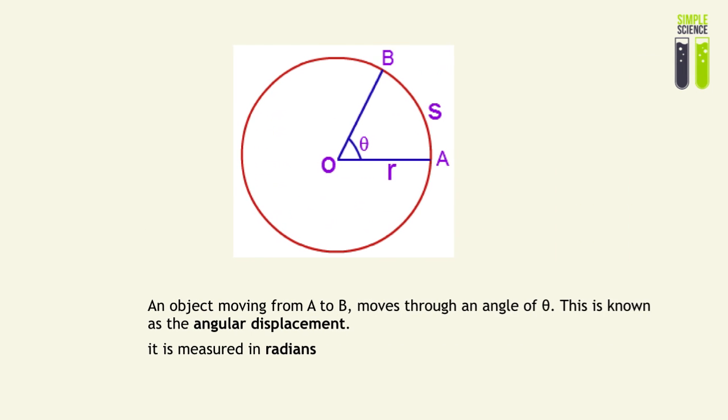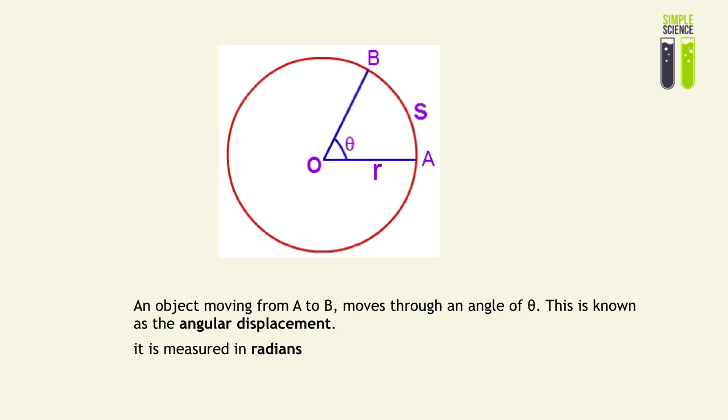So when you look at this diagram, when an object moves from A to B, it is going to move through an angle about the center of a circle. And that angle which it moves from, the angle subtended, is called theta, as we like to call it in circular motion. And this is known as the angular displacement. So it's the angular displacement of B from A, about the origin.